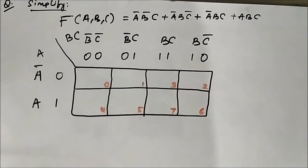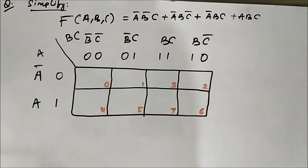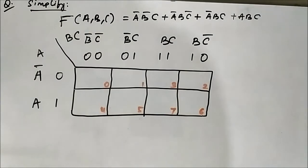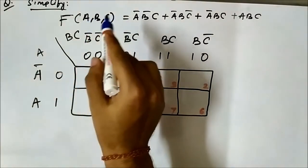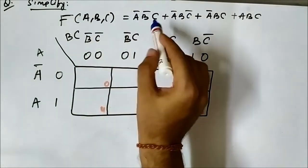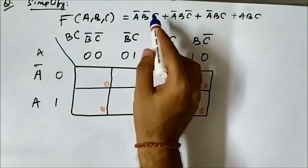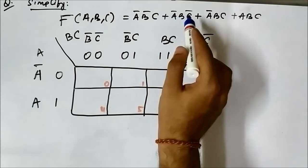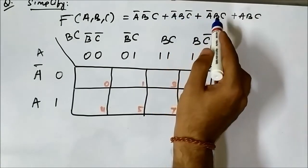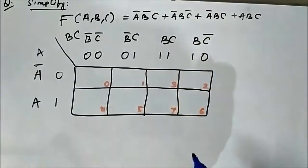This is the ninth question on 3-variable K-map SOP type simplification. We have a Boolean expression given in SOP form: A bar B bar C + A bar B C bar + A bar B C + A B C.